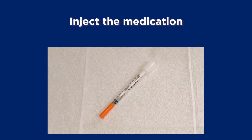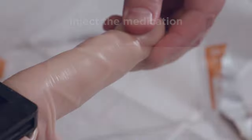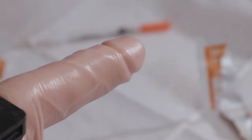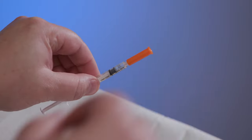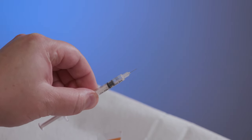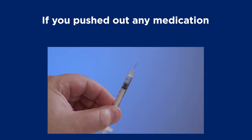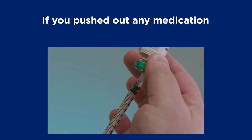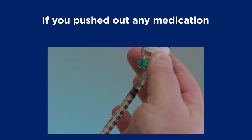Next, you'll inject the medication. Let go of your penis, pick up the syringe, and take off the cap covering the needle. Check to make sure the medication dose is right. If you pushed out any medication by accident, draw up more from the vial following the same steps as before.